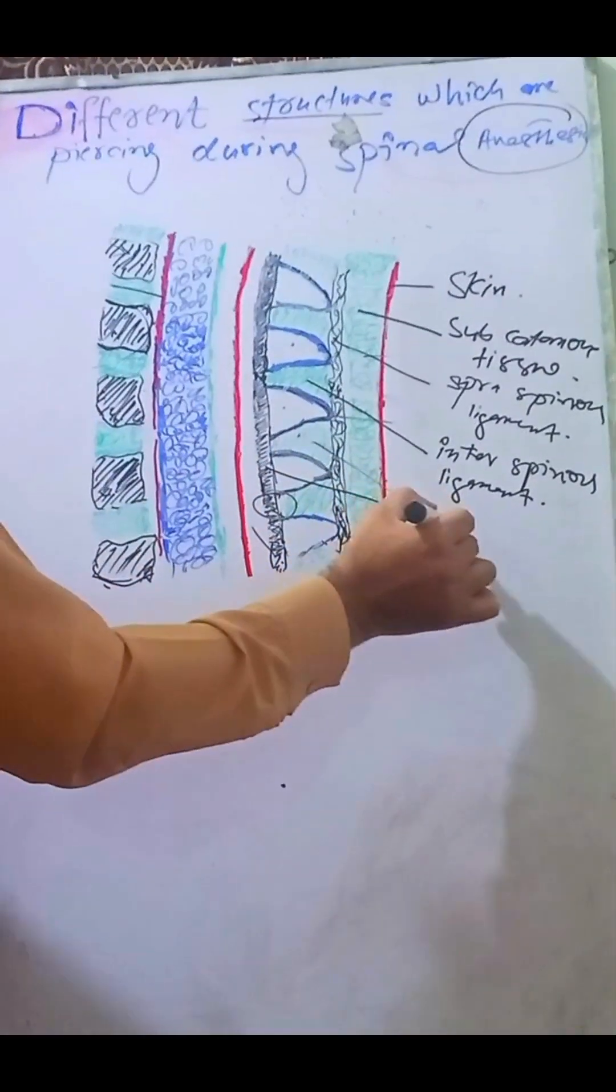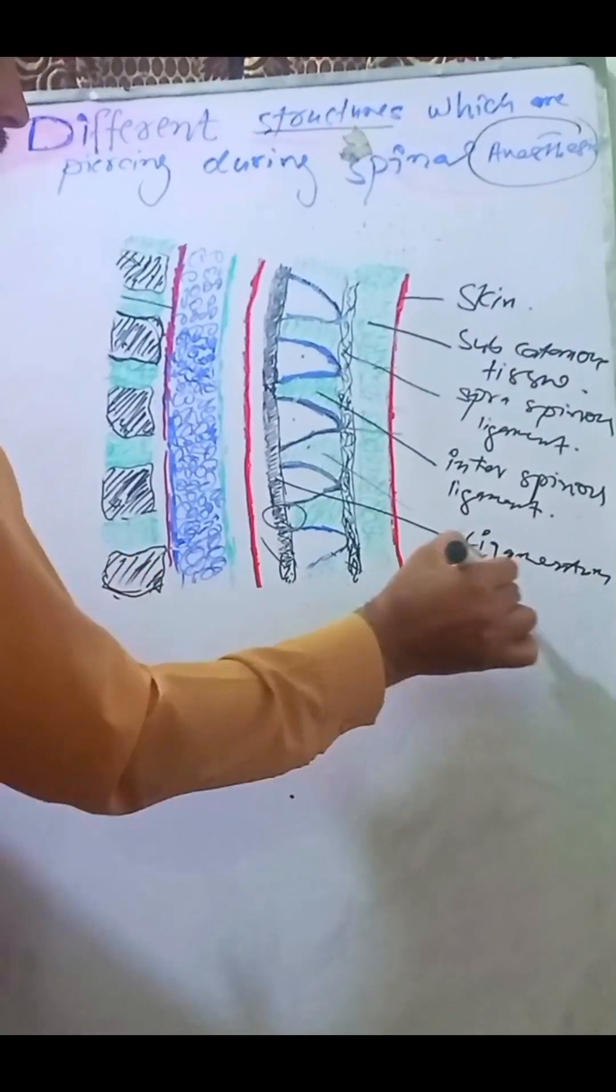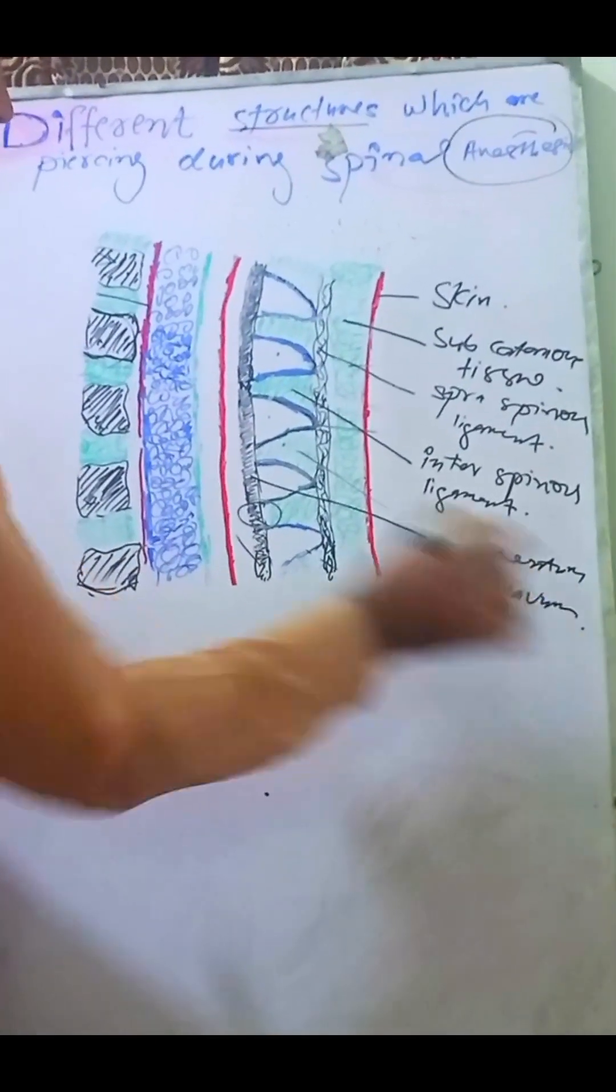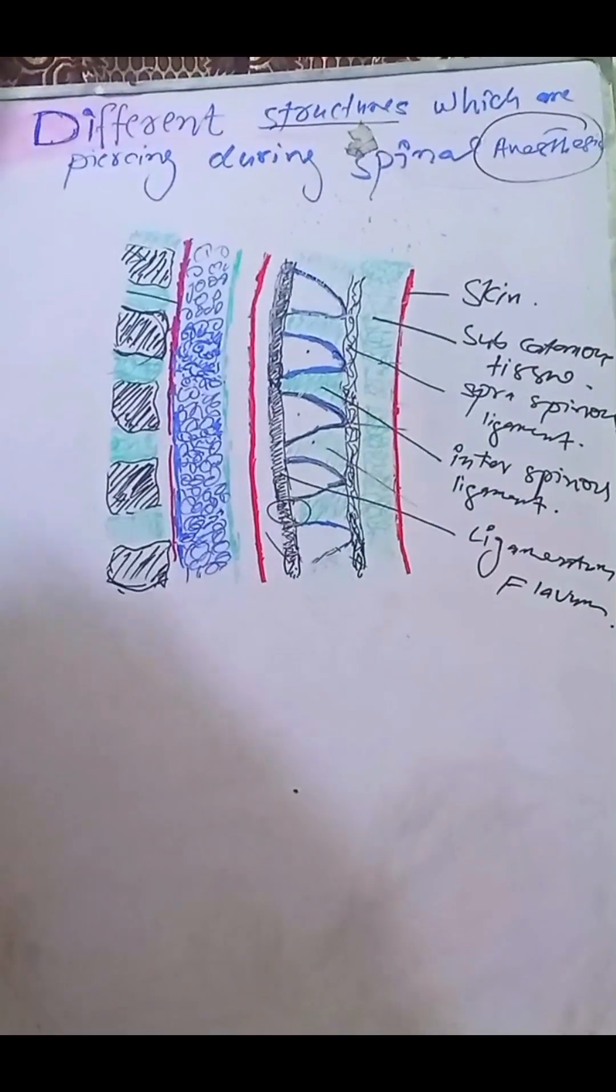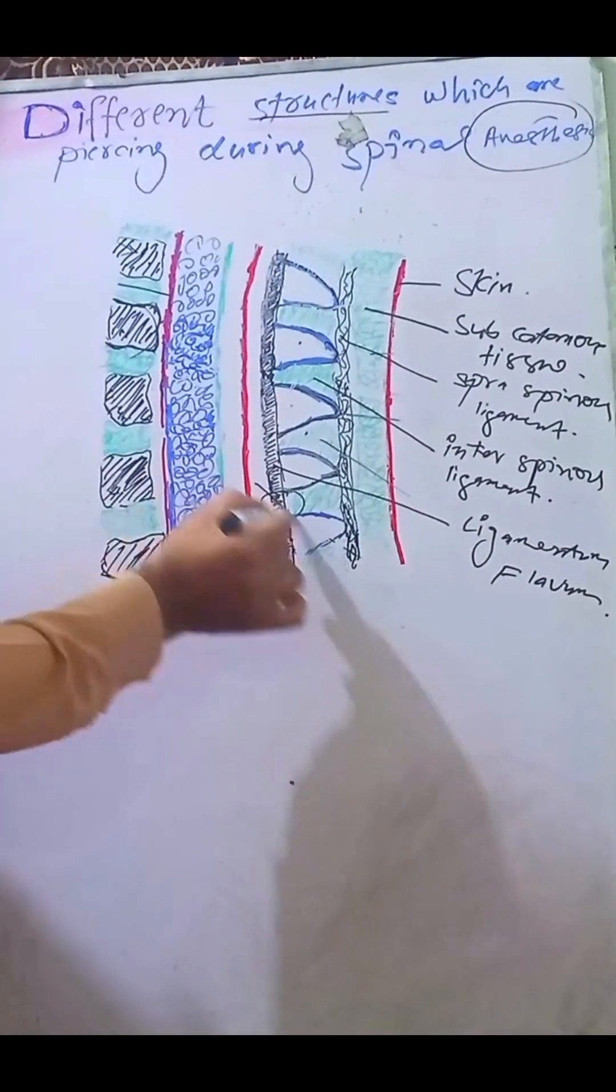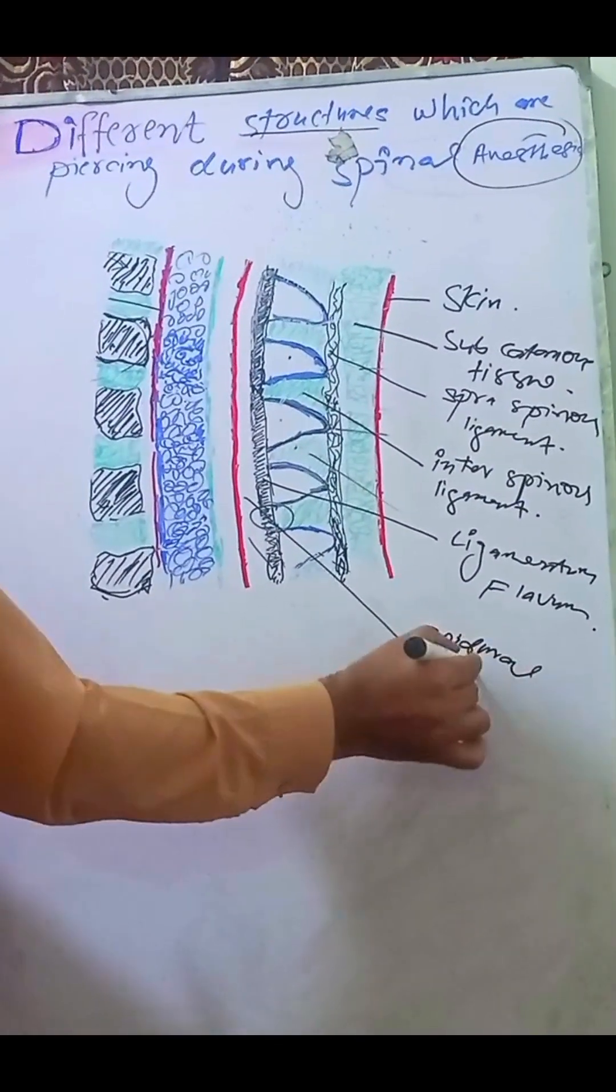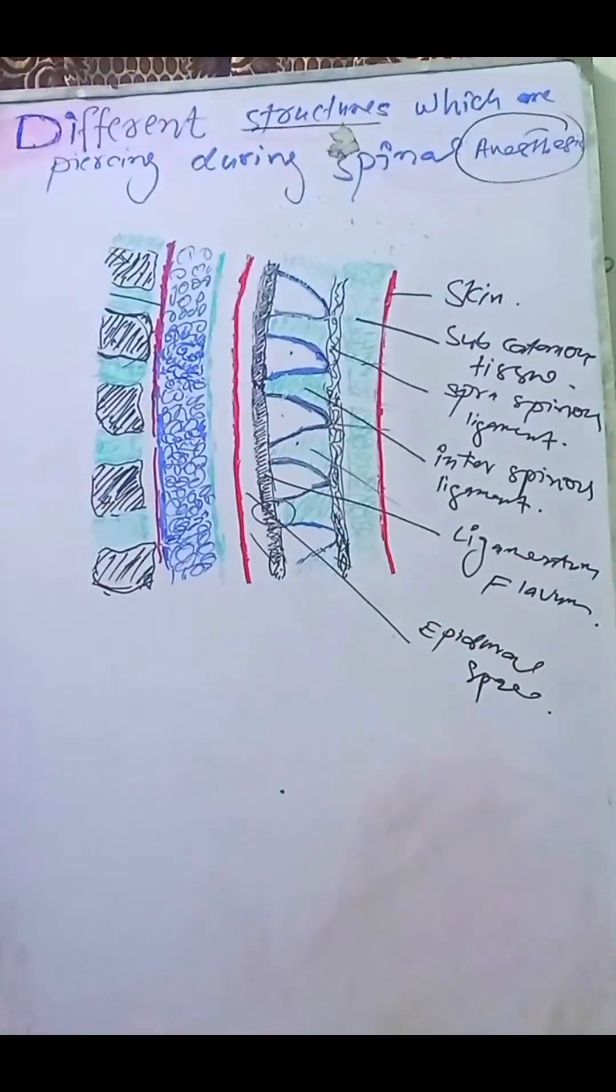The next layer is the ligamentum flavum, which is the hardest layer. When we pierce it, we reach the space called epidural space, where we inject the local anesthetic to achieve epidural anesthesia.